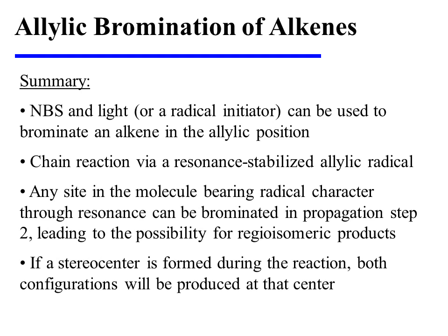In summary, NBS and light, or a radical initiator, can be used to brominate an alkene in the allylic position. The reaction is a chain reaction that proceeds via a resonance-stabilized allylic radical. Any site in the molecule bearing radical character through resonance can be brominated in propagation step 2, leading to the possibility of regioisomeric products. Furthermore, if a stereocenter is formed during the reaction, both configurations will be produced at that center.